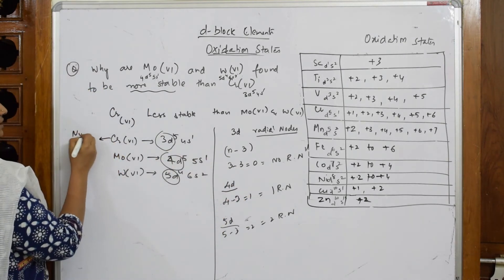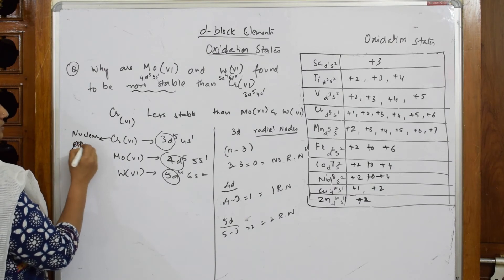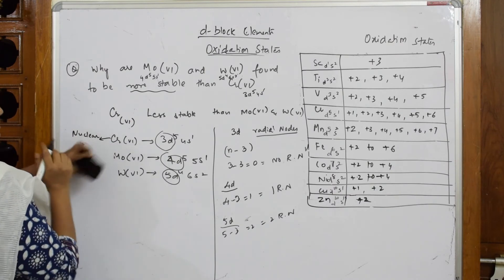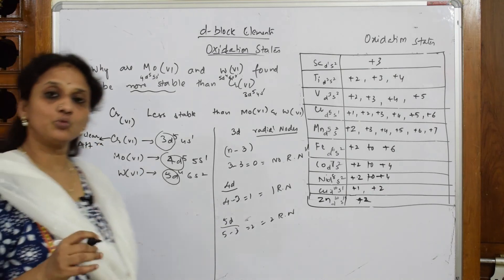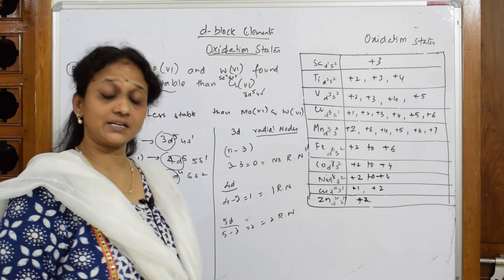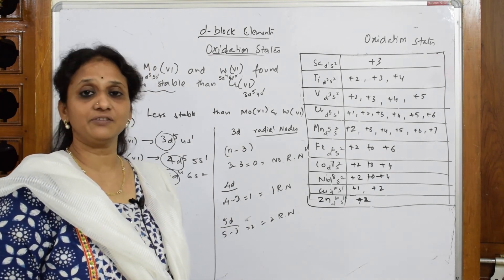to write that nuclear attraction is strong. So because of this nuclear attraction, now tell me, can chromium release or form +6 oxidation state? Can it lose 6 electrons from its outer configuration? Very difficult,